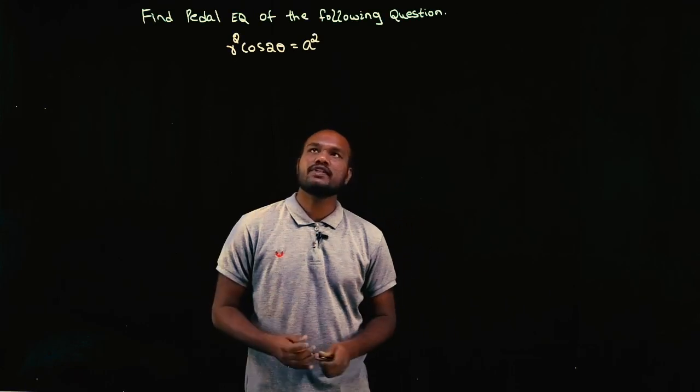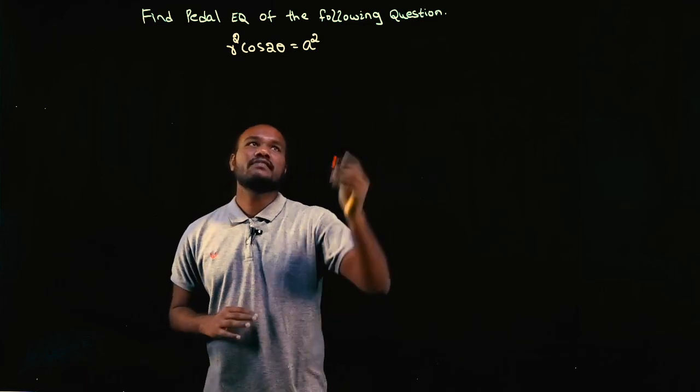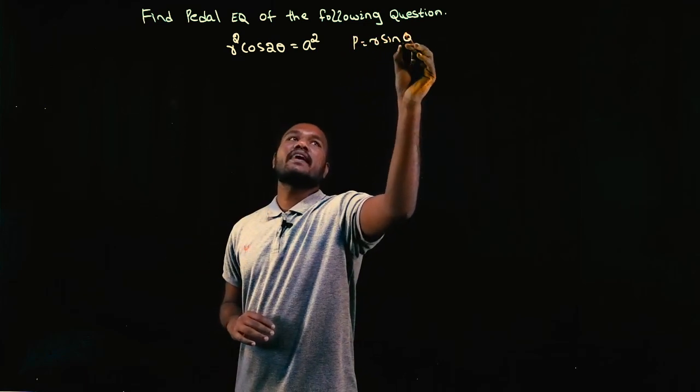What is given in the question? We have to find pedal equation for the following curve. How to find a pedal equation? We have a formula P equals R sine phi.